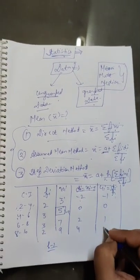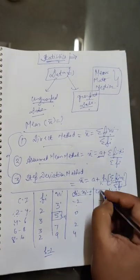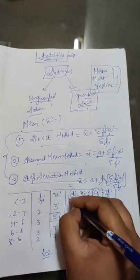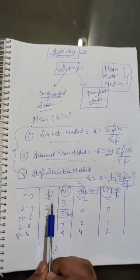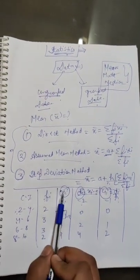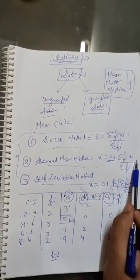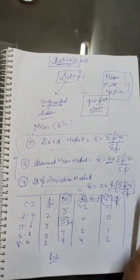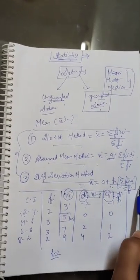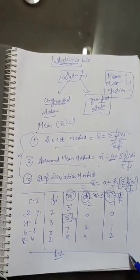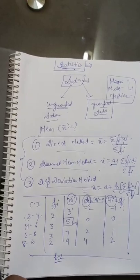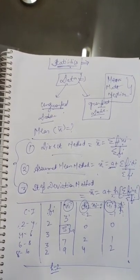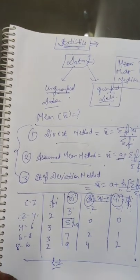Now uᵢ is another new variable defined as uᵢ = dᵢ / h. So: −2/2 = −1, 0, 1, and 2. With uᵢ, dᵢ, and xᵢ all determined, we can easily calculate fᵢxᵢ, fᵢdᵢ, and fᵢuᵢ for each class.